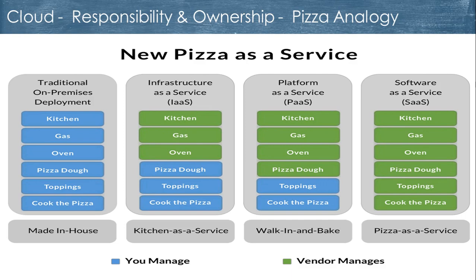As opposed to going out to the market, picking up the pizza dough and the toppings, assembling them together at home, and putting them in the oven. Your pizza is ready in some time. You have less responsibility there because you've given that responsibility to the ingredient provider — could be Walmart or Target or wherever you pick things up from. You don't have to cook a whole lot of things in this second case, which we refer to as kitchen as a service.